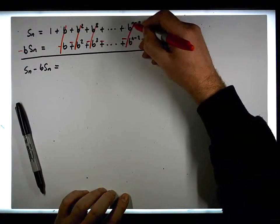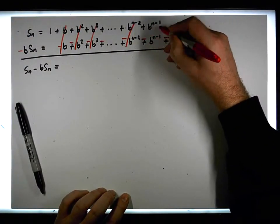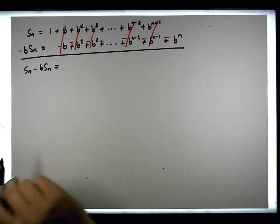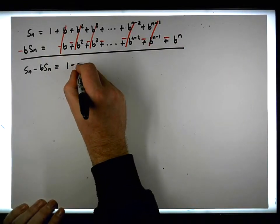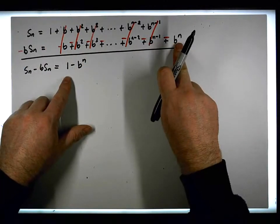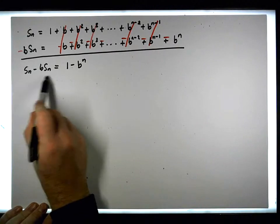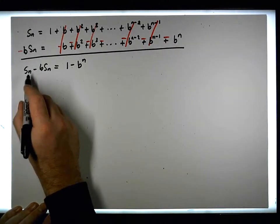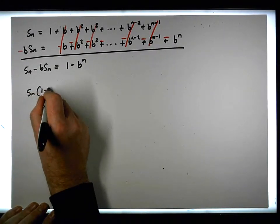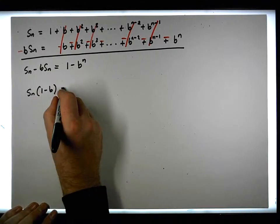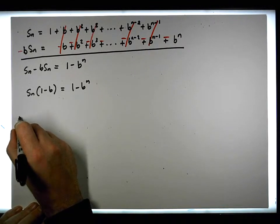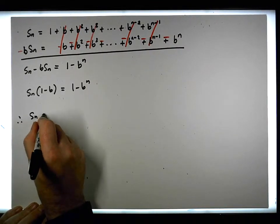The b to the n minus two cancels, the b to the n minus one cancels, and what we're left with is two values: one and minus b to the n. Then we can solve this for Sn, the sum of the n terms. We have Sn times one minus b must be equal to one minus b to the n.